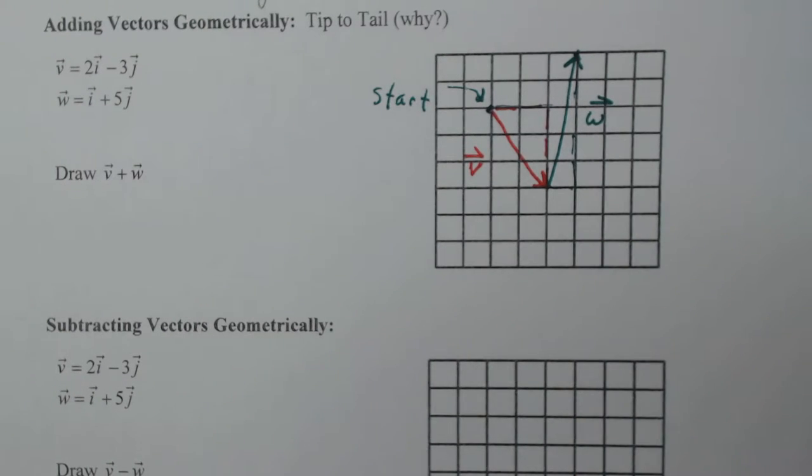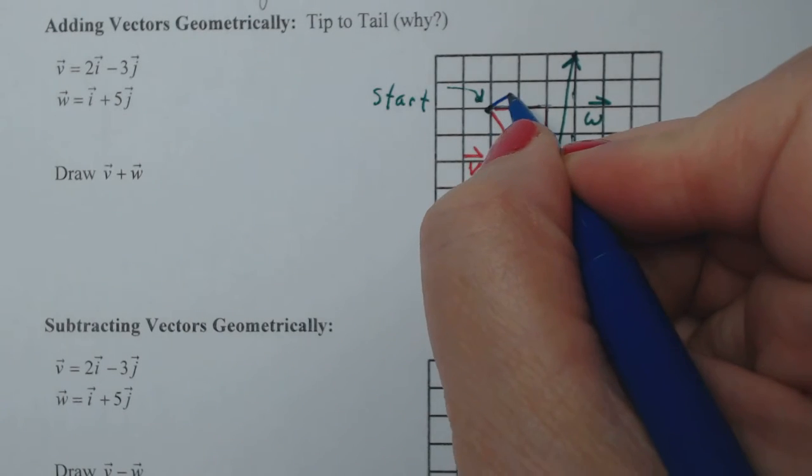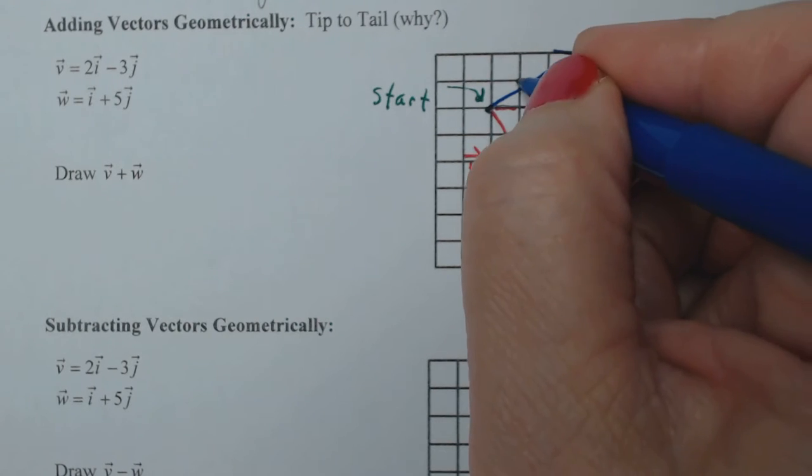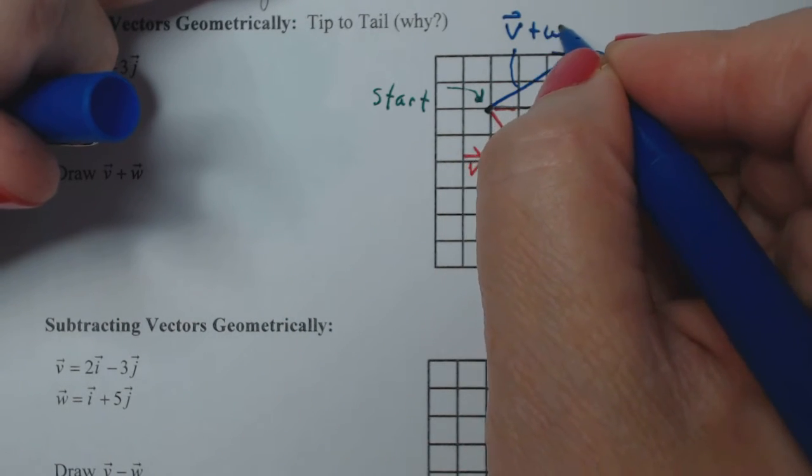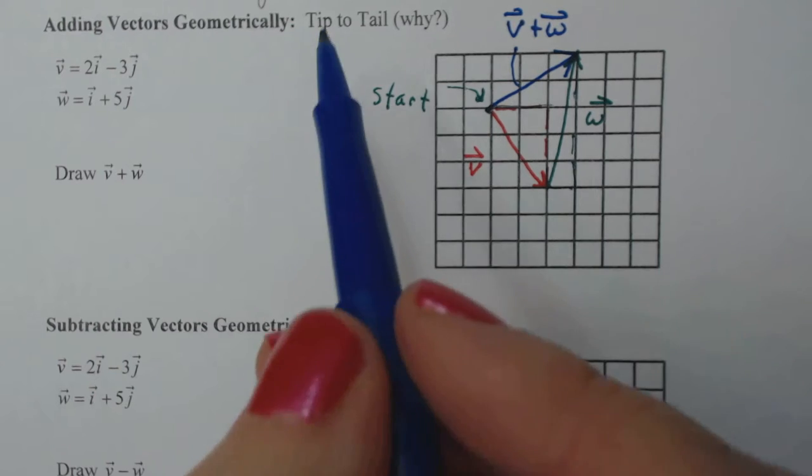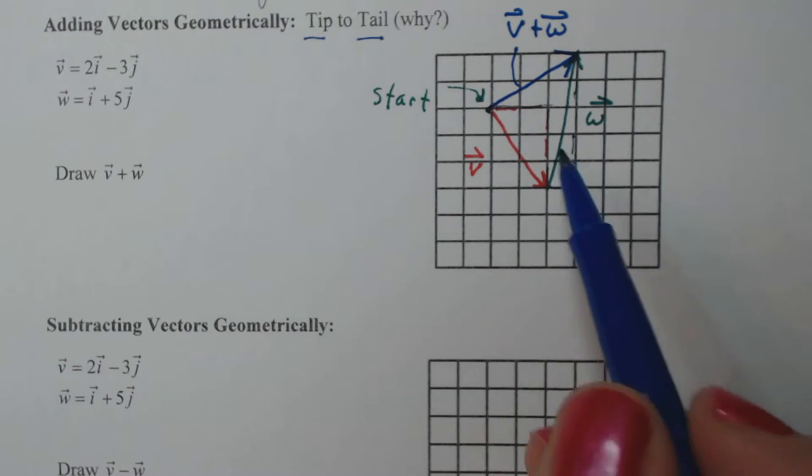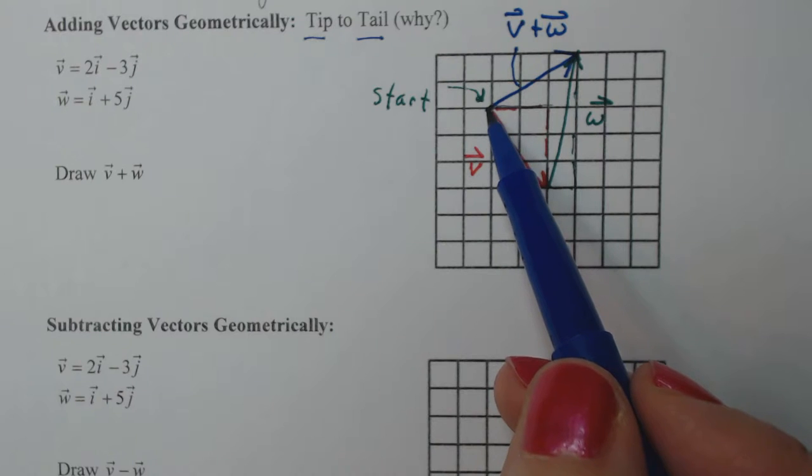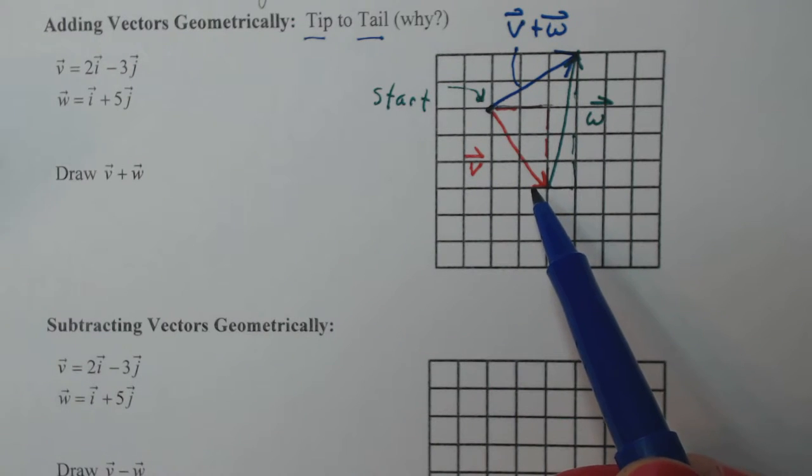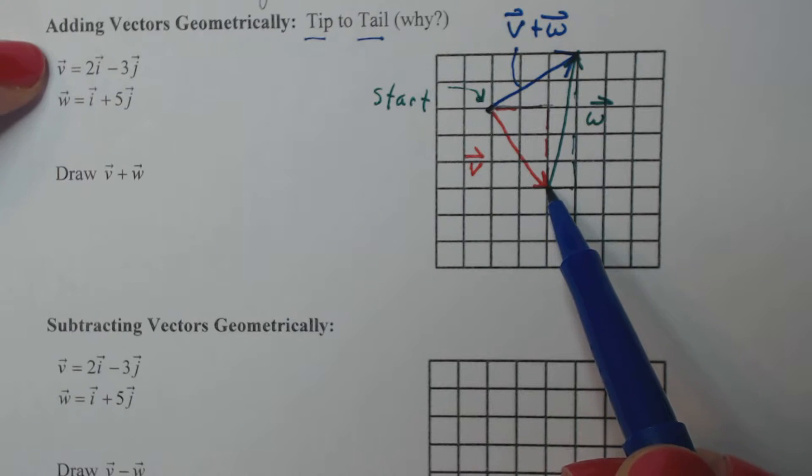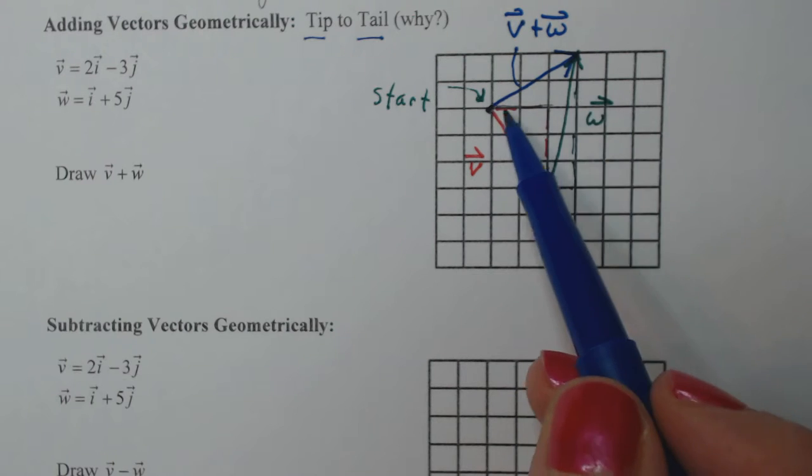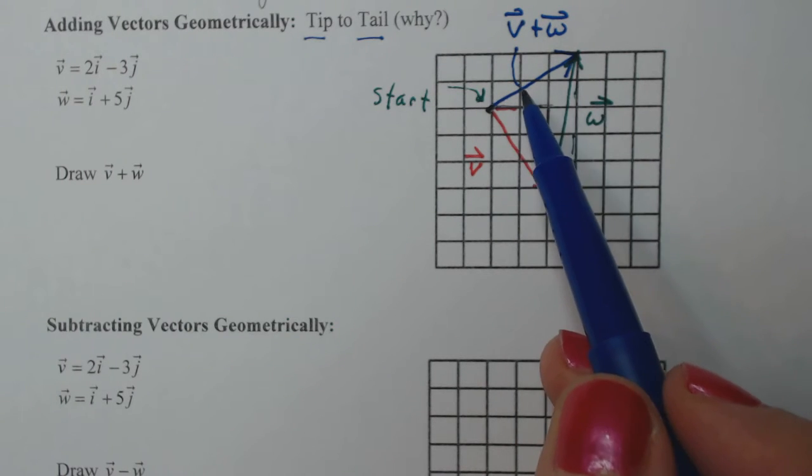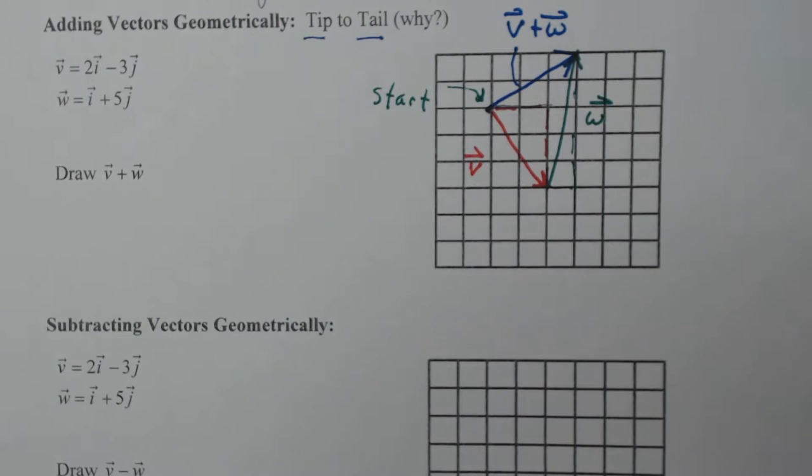And if I wanna talk about the total displacement of the box from beginning to end, then I would say, okay, where did I start and where did I finish? So then that vector there would be v plus w. And so they say here tip to tail. Why do we do that? Because we're talking about displacement. I'm displacing the box here to here and then I take the tail of w and place it at the tip of v to do the second part of the displacement. And then the total displacement is going to be the sum.